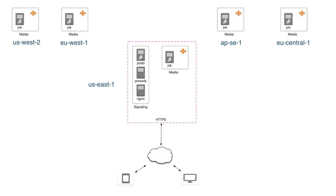Selecting a bridge for a specific participant is as simple as possible. We look at the user's region — right now based on latency-based routing from Amazon's Route 53, though we are evaluating whether to use another solution. If Jicofo has a video bridge instance in the same region, it uses that. Otherwise it uses one of the existing bridges in the conference based on load. If more than one bridge is available in the region, selection is based on load — the least loaded bridge is chosen.